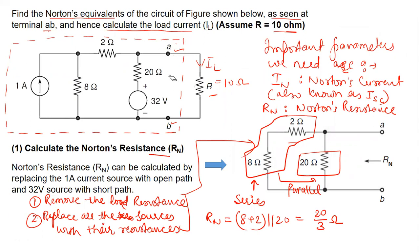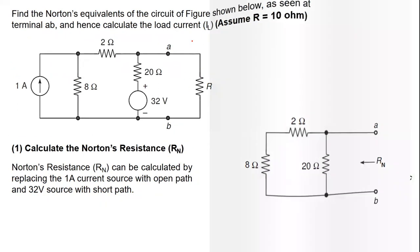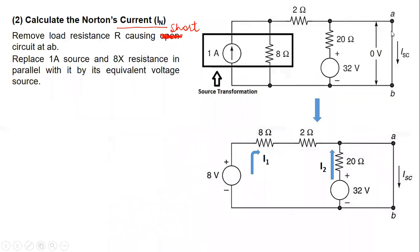So we will replace this load resistance given here with the short circuit. So we will short both the terminals A and B. So whatever current is flowing in this particular branch A, B will be the short-circuit current, or we can say the Norton's current. Both are same. Now, how will we calculate the Norton's current here or short-circuit current here? That all depends upon the kind of circuit we have.